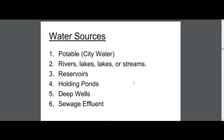Some of our sources for water: potable city water would be the one you want to use least — we want to save that for drinking water. Rivers, lakes, streams — Southern Pines drinking water comes out of Drowning Creek. Reservoirs and holding ponds on a golf course are probably going to be your best option. The best designed golf course is like a bowl so all the water comes back to the holding pond. Deep well water is thousands of years old, and we want to save that as well.